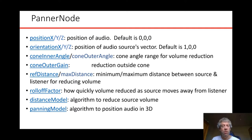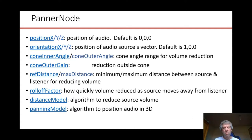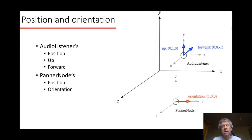Finally, there is a panning model: once we've determined how the sound is processed, we render it over speakers or headphones using a certain rendering system — something like stereo panning, or something far more advanced that takes into account how sound bounces off your body, head, and ears as it would in the real world.